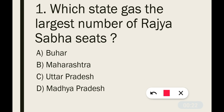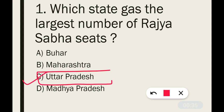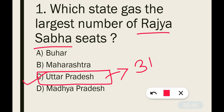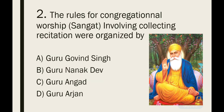Question number 1: Which state has the largest number of Rajya Sabha seats? The correct answer is Uttar Pradesh — option C is the correct answer. Uttar Pradesh has approximately 31 Rajya Sabha seats. This is an important question.